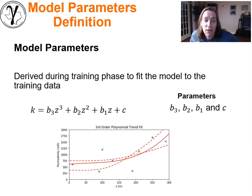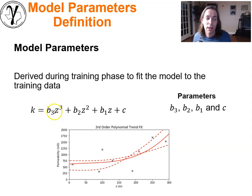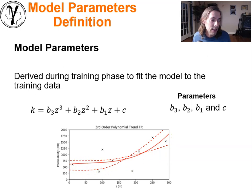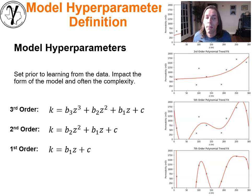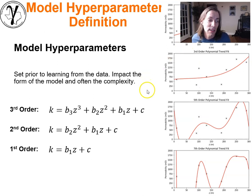Let's talk about training and testing overall — just a quick reminder. Model parameters are trained, set, and fit during the training phase of model construction. We take the training data and fit the associated parameters — such as B3, B2, B1 and the constant term in a polynomial — to maximize accuracy on the training data. Hyperparameters are different: they constrain the complexity of the model. For a polynomial model, the hyperparameter would be the selection of the order — seventh, fifth, third, or first order.